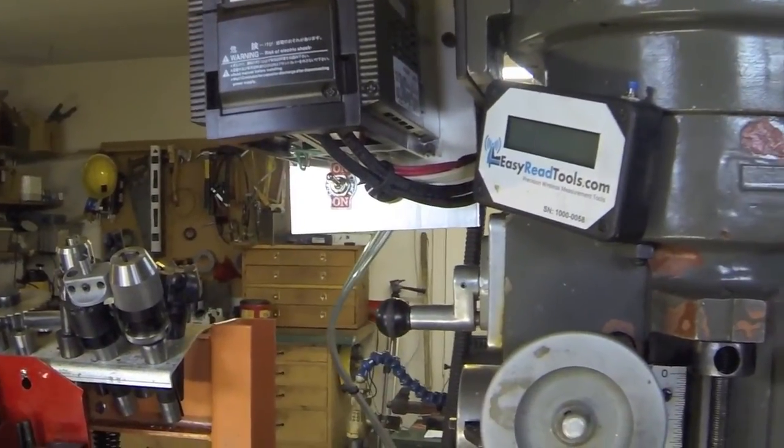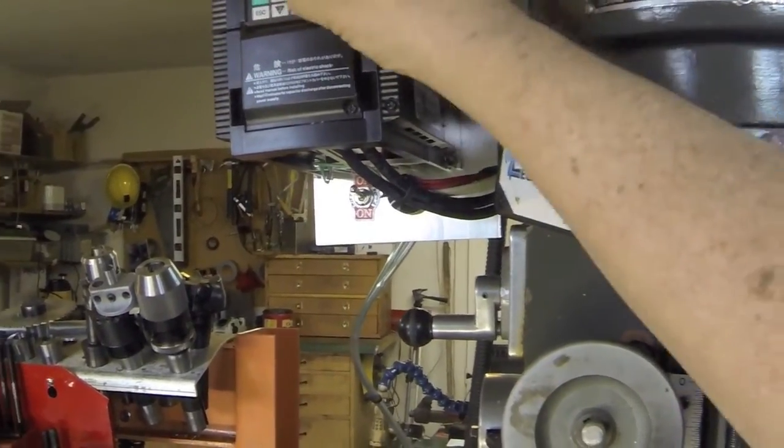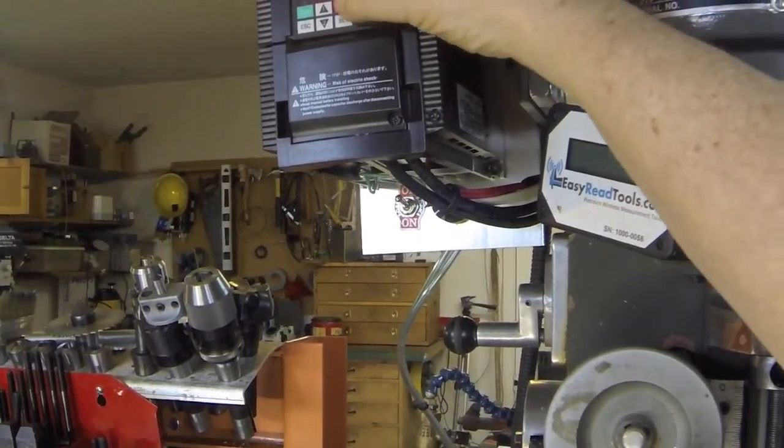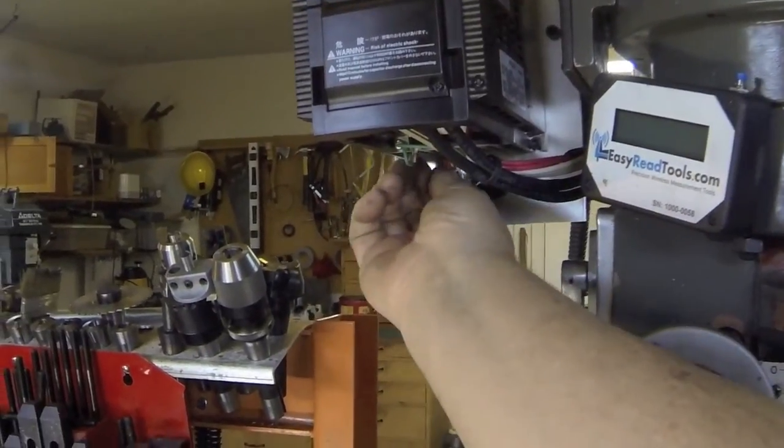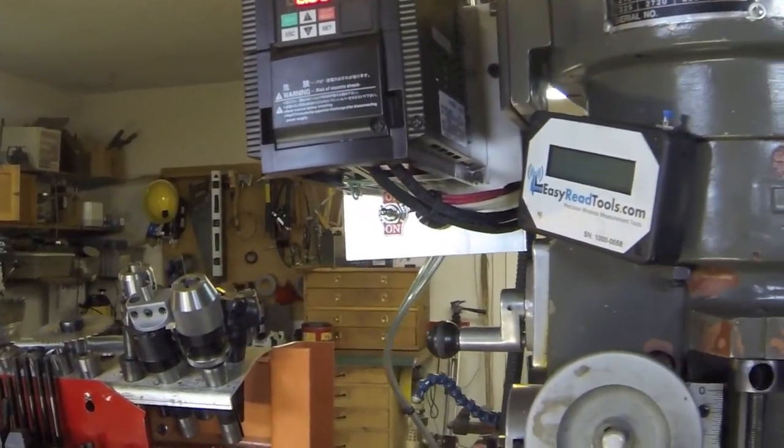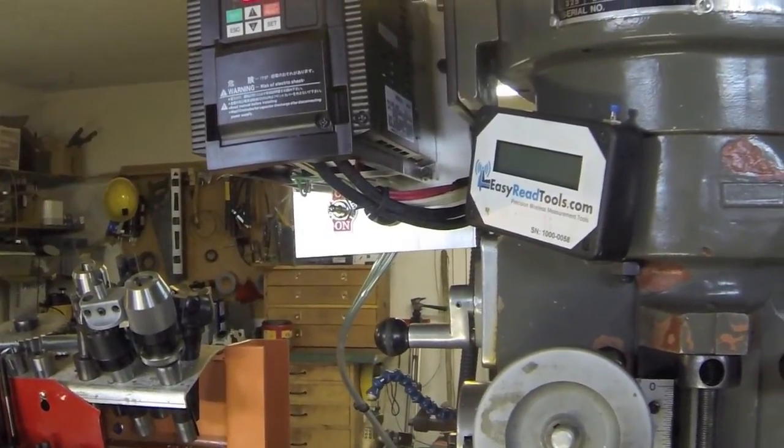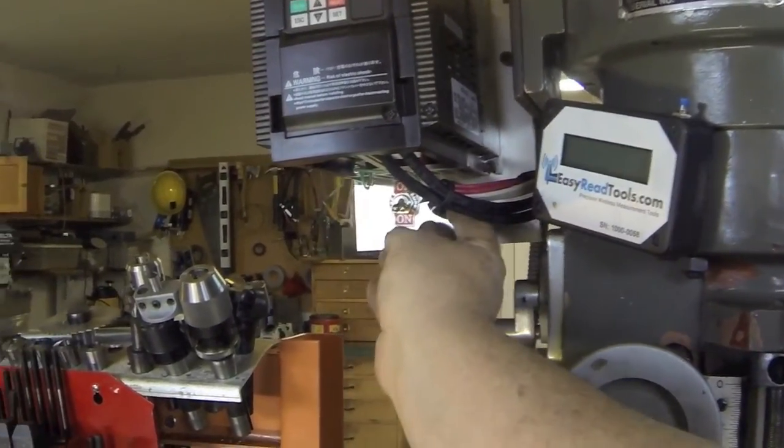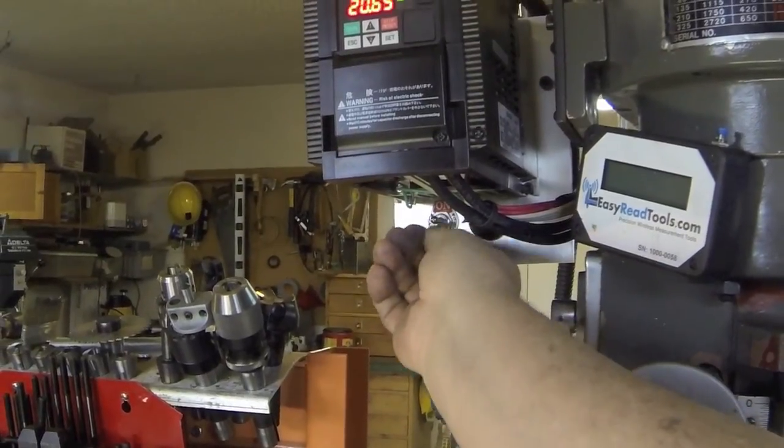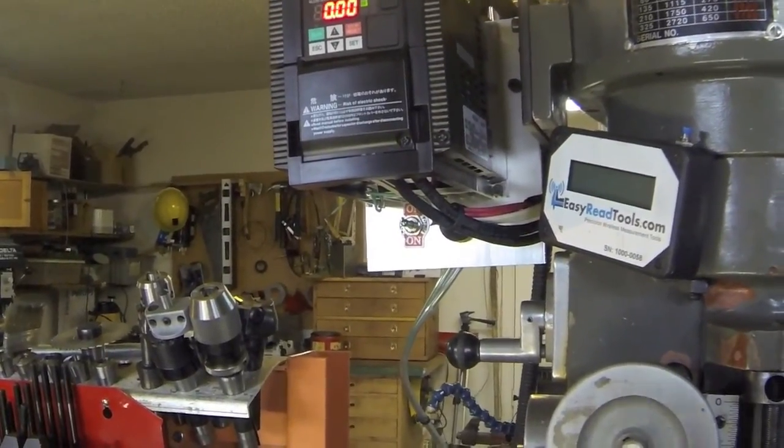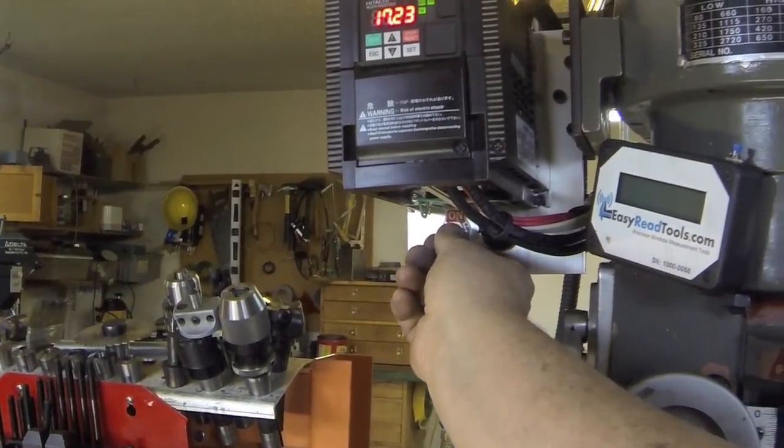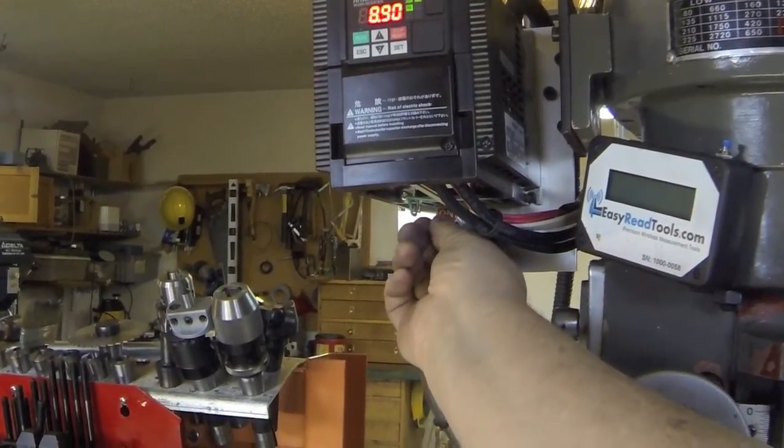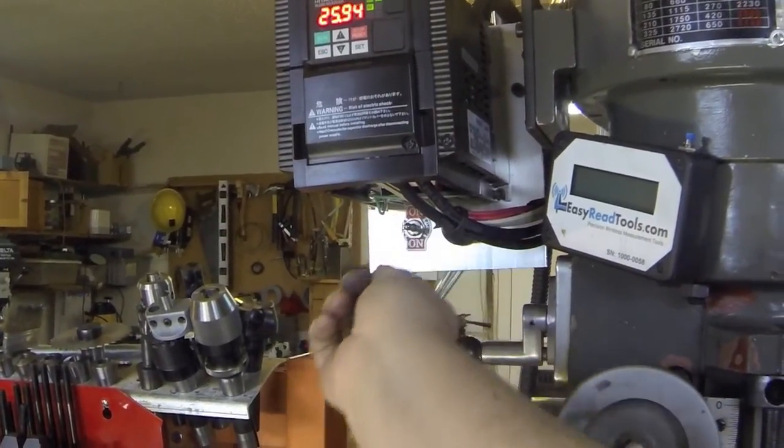Reverse. It hit an error condition. There we go, turn it in reverse now. Stop. The error condition is I've got the deceleration time set too fast for the speed. That seemed to work okay. There we go, in reverse.